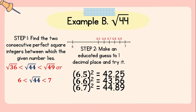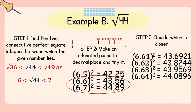Step number two: make an educated guess to one decimal place and try it. Since 44 is closer to 49 than 36, we can say that square root of 44 is closer to 7 than 6. We then square numbers closer to 7 with one decimal place: 6.5² = 42.25, 6.6² = 43.56, 6.7² = 44.89. From here we can say that the square root of 44 lies between 6.6 and 6.7.